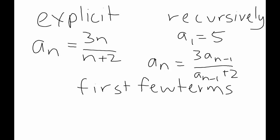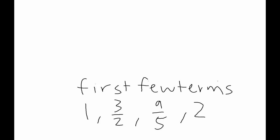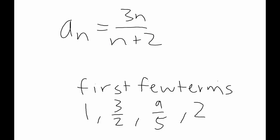For the last type, first few terms, you are given the first few terms of the sequence and you have to calculate the rule yourself. For example, if given 1, 3/2, 9/5, and 2, what is the rule? The rule is AN equals 3N over N plus 2 — the same as our explicit example. Plugging in 1 gives 3/3 which is 1; plugging in 2 gives 6/4 which is 3/2, and so on. This kind of sequence is much more difficult to find than the other two.